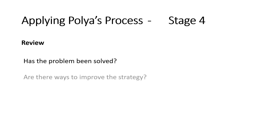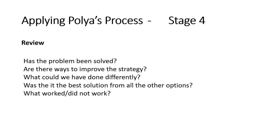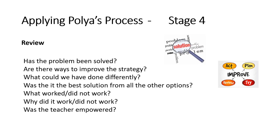The final stage involves a comprehensive review of the entire process. In reviewing, you will need to ask yourself the following questions. In summary, you investigate to determine whether or not the problem was solved. You also need to find out ways of improving any part of the process, and finally, you make the necessary adjustments for improvement.